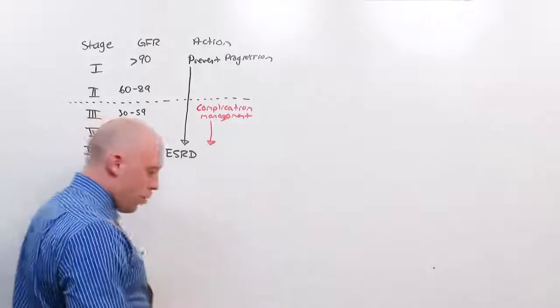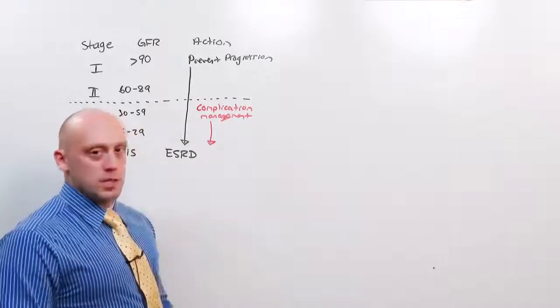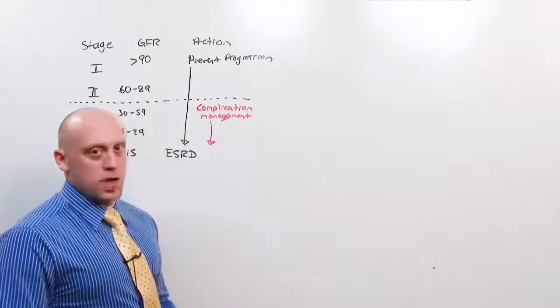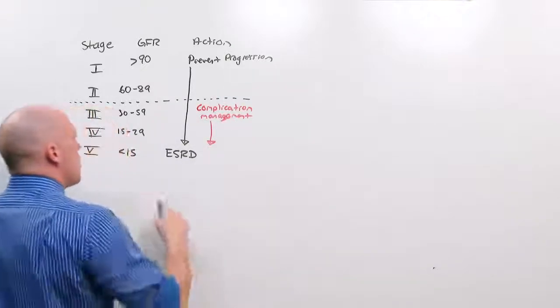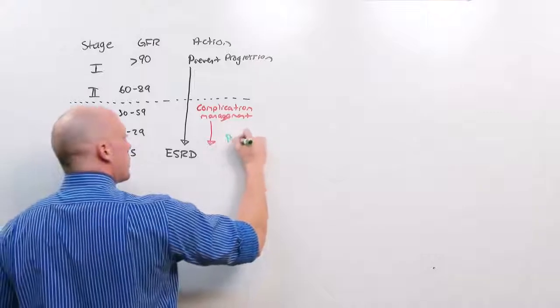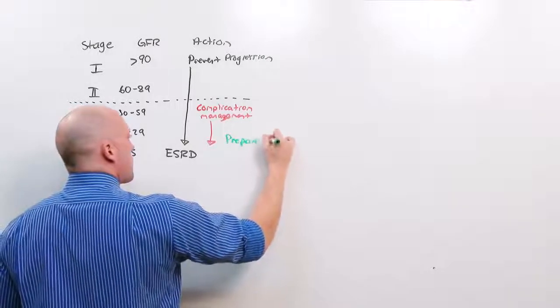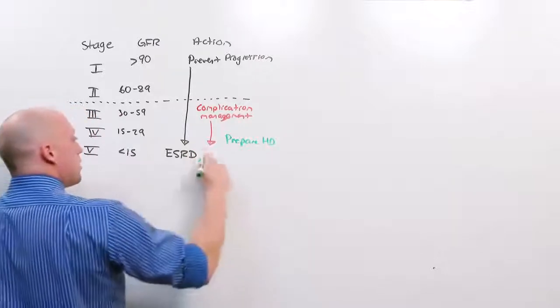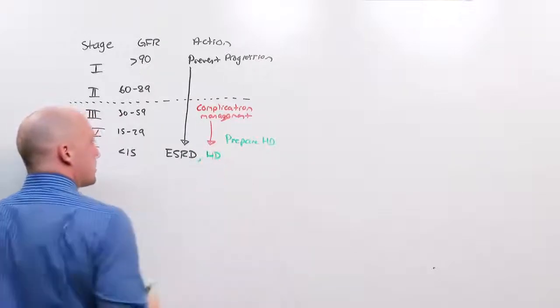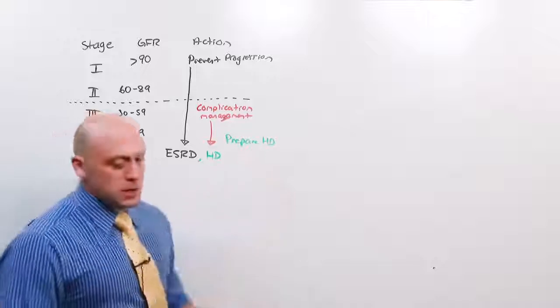At CKD 4, the progression to end-stage renal disease is essentially inevitable. You are going to try to prevent progression and manage the complications. But at CKD 4, you need to prepare for dialysis. Because at CKD stage 5, you must have dialysis. When I say prepare HD, what I mean is if the person is going to have hemodialysis, they're going to have to have an AV fistula.